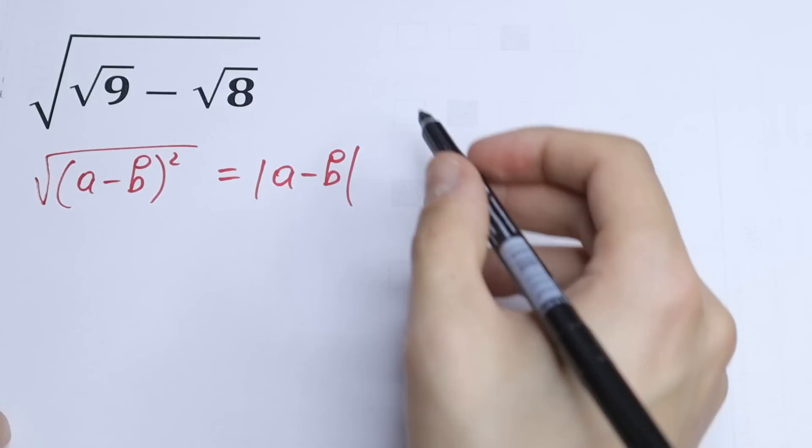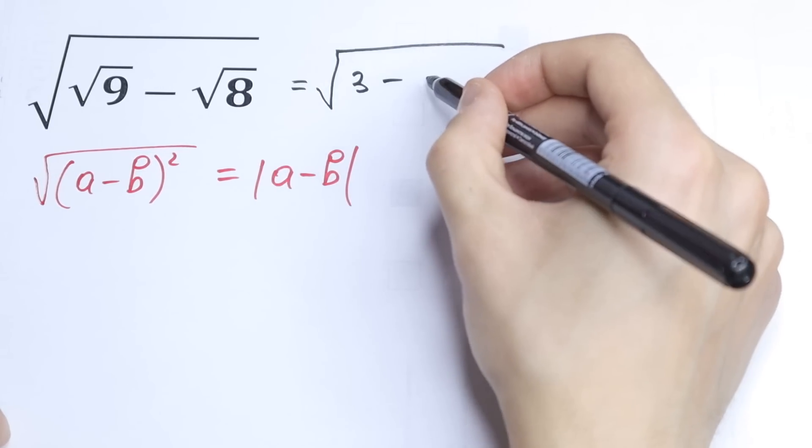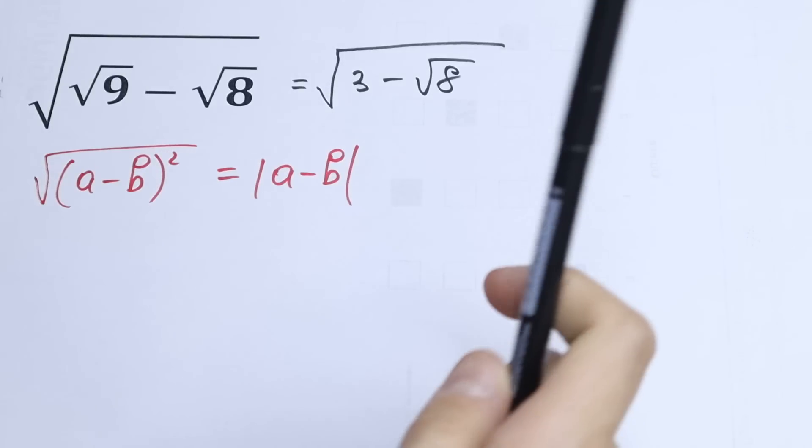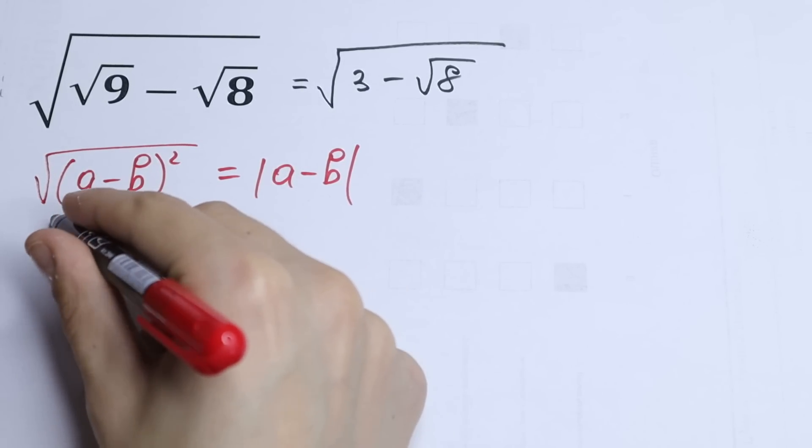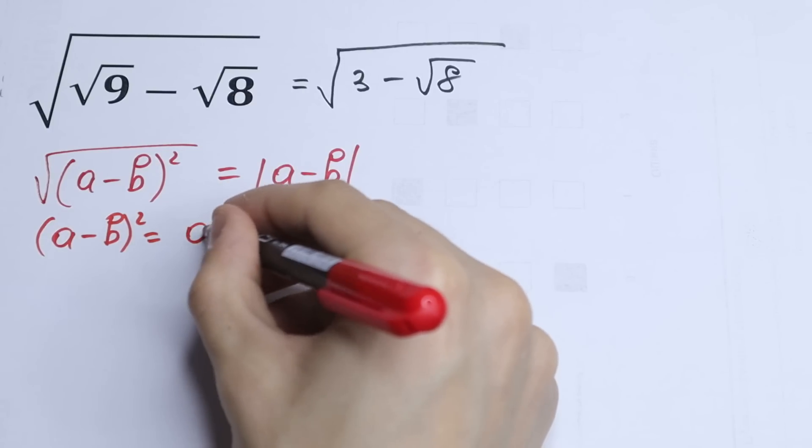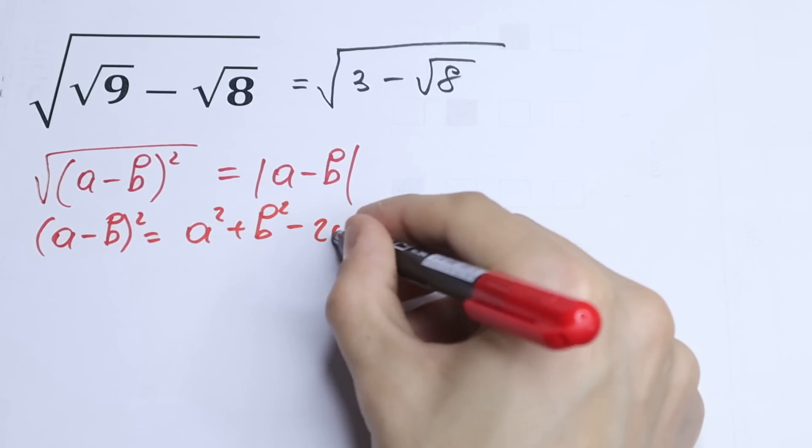As you can see right here, the √9 we can calculate right now, it will be equal to √3. But how does this formula look like? This formula looks like a² + b² - 2ab.